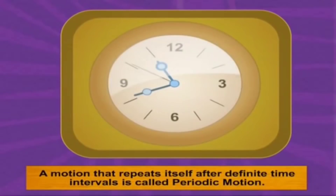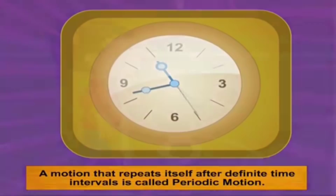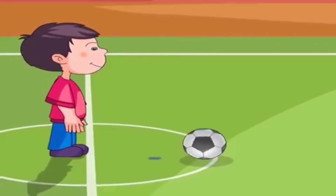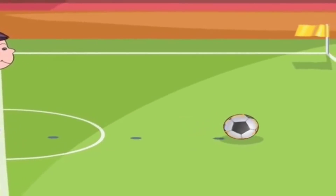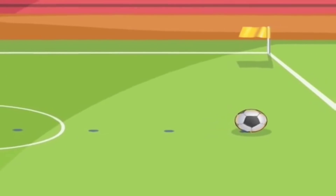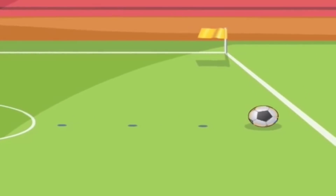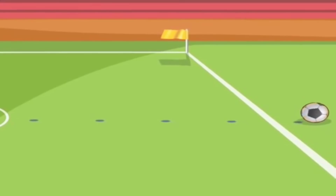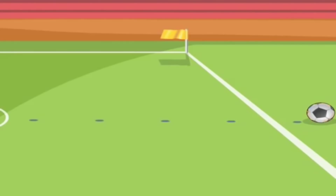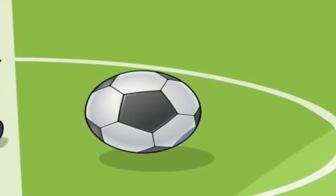A moving clock needle is a wonderful example of periodic and circular motion. Have you ever kicked a football and seen it move on the ground? A football moves neither in an exclusive linear motion nor an exclusive circular motion. Let's look closely.